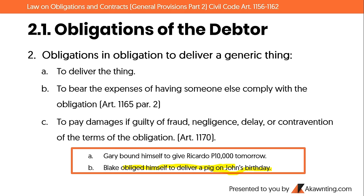C) To pay damages if guilty of fraud, negligence, delay, or contravention of the terms of the obligation. This obligation is present in all types of obligations. It is conditional — it applies only if one of the four breaches actually occurs during performance.